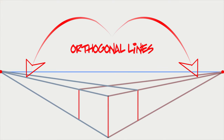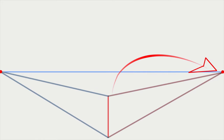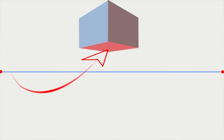In two-point perspective, we always start off with a vertical line. A vertical line indicates a corner — this can be an interior or an exterior corner. Then all lines that go to our vanishing point are called orthogonal lines. Left goes left, right goes right — that's all. Also remember: anything above the horizon line, we see the bottom of it; anything below the horizon line, we see the top of it.